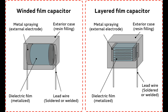Polycarbonate film capacitors use a polycarbonate (PC) film as the dielectric material. They provide good stability, low losses, and high accuracy. Polycarbonate film capacitors are used in applications requiring high precision and reliability, such as in timing circuits, audio systems, and instrumentation.